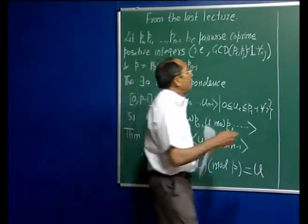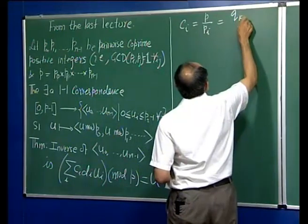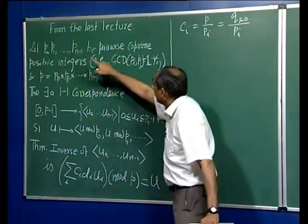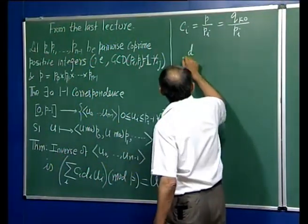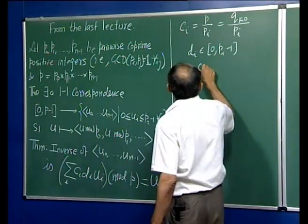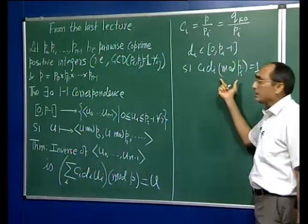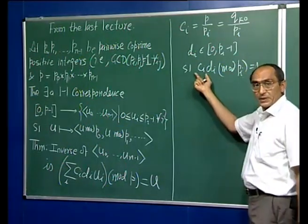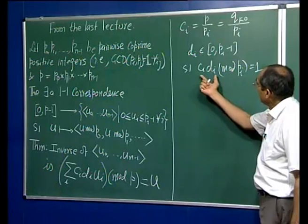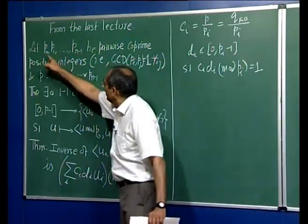Here C_i is P divided by P_i, which is the product of all the integers other than P_i. And D_i is in the range 0 to P_i minus 1 such that C_i times D_i mod P_i equals 1. In other words, D_i is the modular inverse of C_i. We showed that such a D_i always exists, simply because all these integers are mutually co-prime.